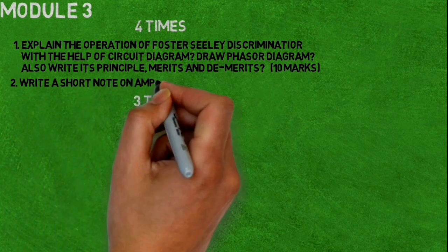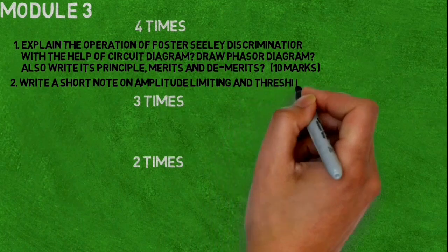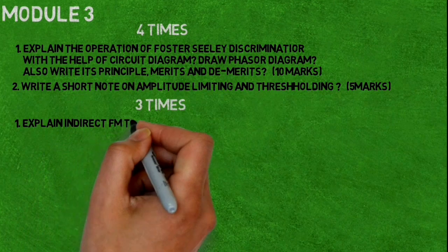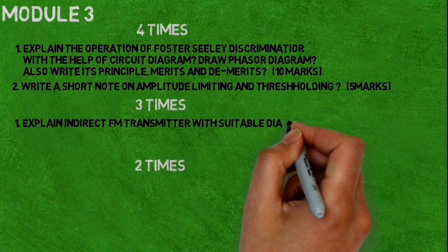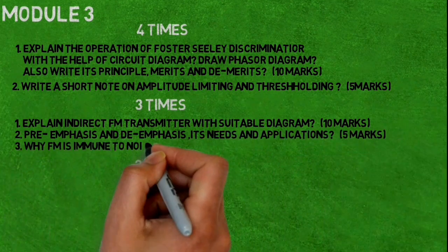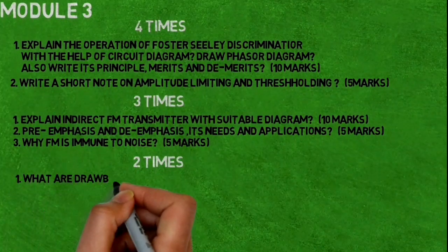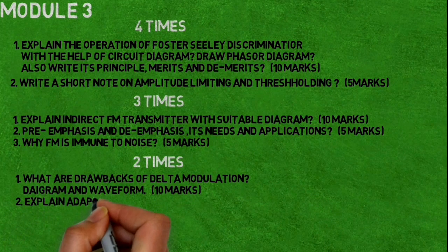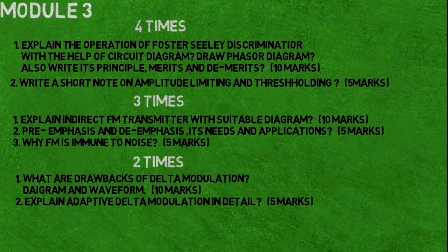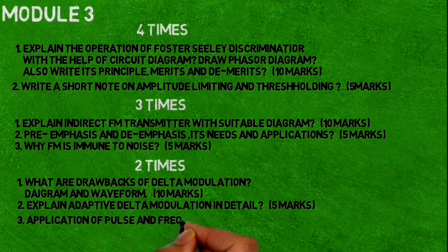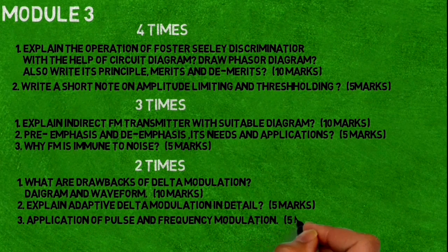Next questions are: explain indirect FM transmitter with suitable diagram. Pre-emphasis and de-emphasis, its needs and applications. Why FM is immune to noise. What are drawbacks of delta modulation with diagram and waveforms. Explain adaptive delta modulation in detail. Application of pulse and frequency modulation, it comes for five marks.